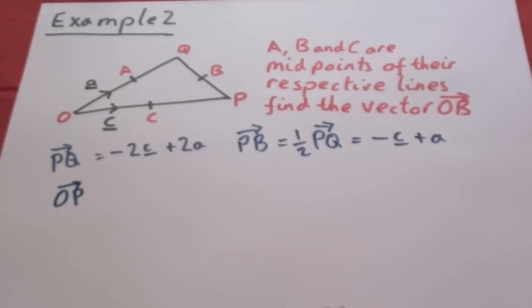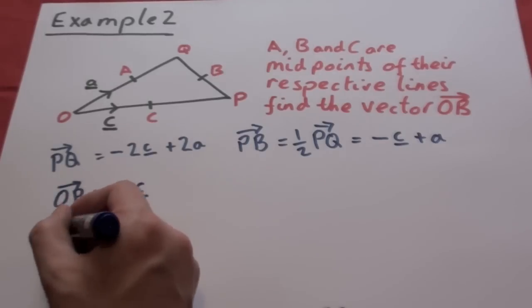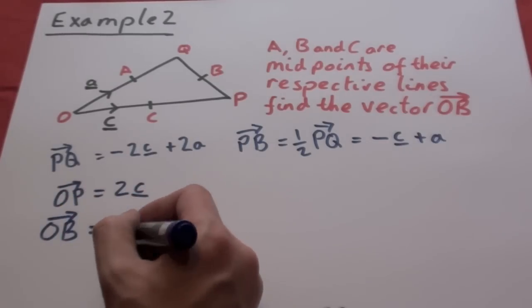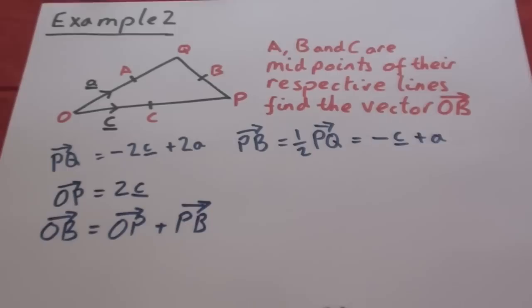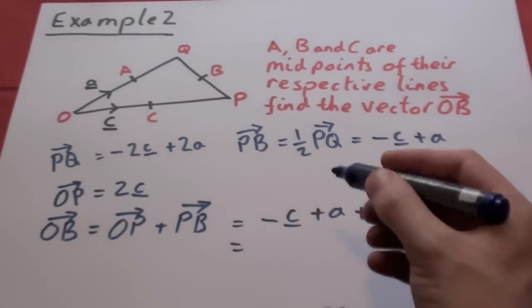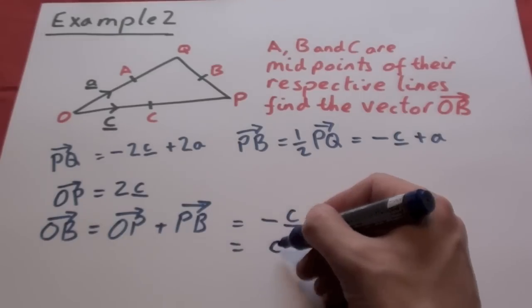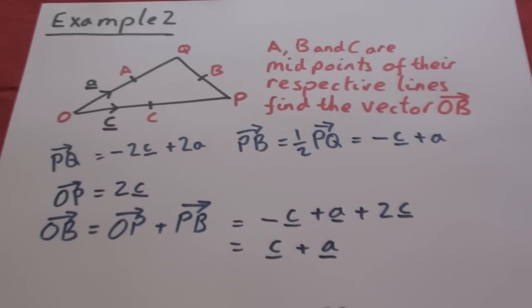However, we also want to get OP. So OP is just two lots of C since C is up to the halfway mark. So O to B, we have to go OP and PB. So if we add up what PB is we get minus C plus A and if we add up what OP is we have our two C. Collect the like terms we find out C plus A.